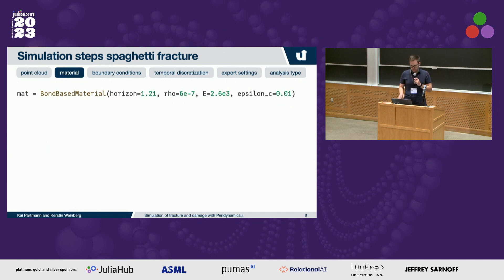To sum up, the package Peridynamics.jl is able to perform fracture simulations with only a few lines of code. The current feature set is a solid foundation, but we want to extend that. For future development, we plan on releasing new material models and additional discretization features. One core point: we want to improve the multi-threading performance of the code. We welcome you to submit issues, feedback, and pull requests to improve the package with us. Thank you very much for your attention.